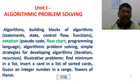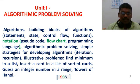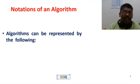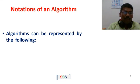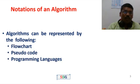Algorithms can be written and represented in three ways: pseudo code, flowchart, and programming language. Algorithms can be represented by the following — one: flowchart, two: pseudo code, three: programming language. Now we have flowchart.